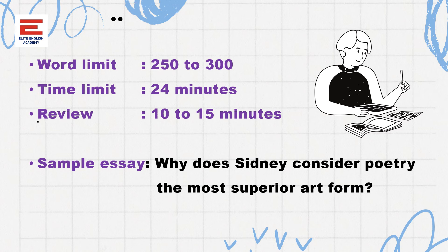Going for review after each question is a bad idea — it will spoil the mood of the examination. Complete all five questions at a stretch, then use the remaining 10 to 15 minutes for review. You can carve out those minutes by saving two minutes from each question, giving you enough time to rework on unforced errors.